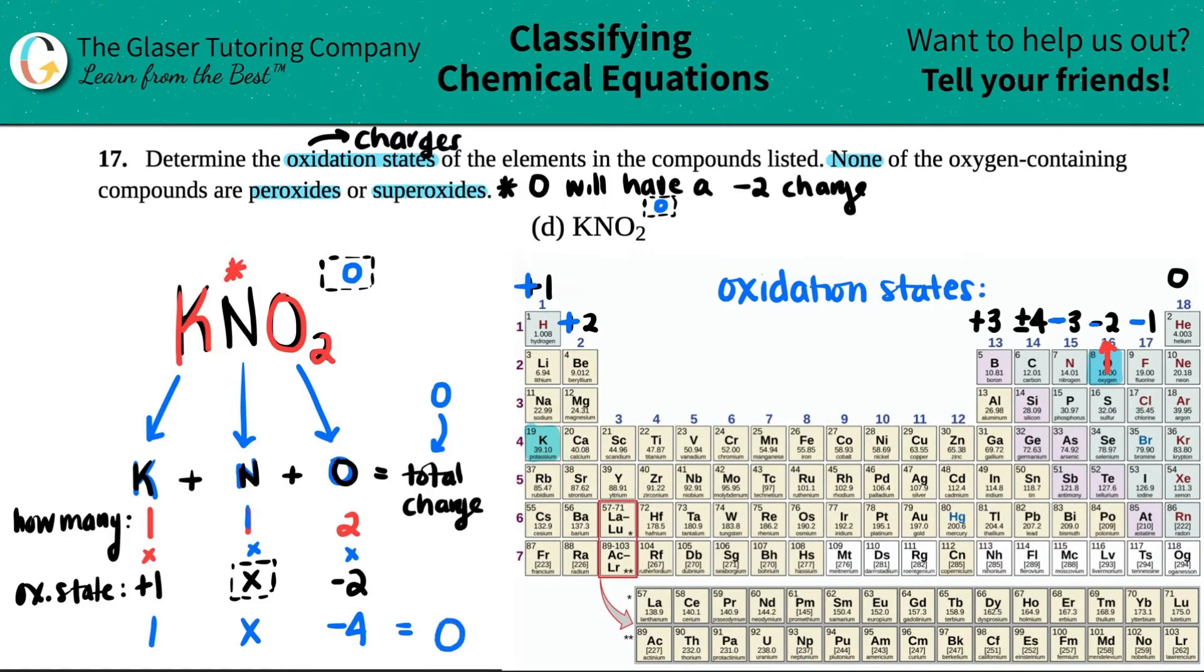And remember that equals the total charge. The total charge in this case was a zero. And you always add everything up, so it would be 1 + x + a -4, which basically is just a -4.